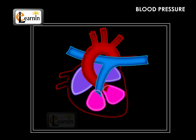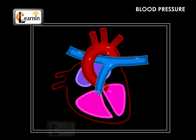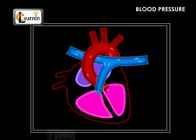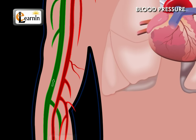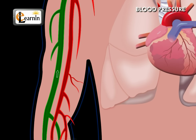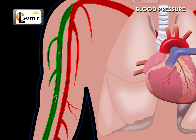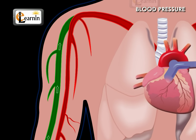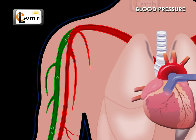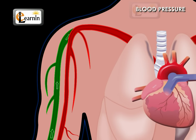When diastole occurs, more blood is pumped by the heart. The blood vessels return to their normal diameter and maintain blood pressure at a lower level. This is diastolic pressure.